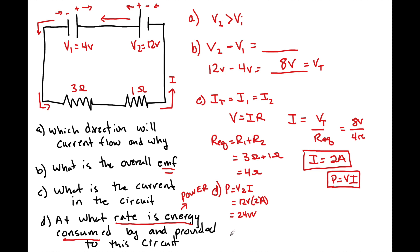While at V1, it's going to absorb energy at a rate of P equals V1I. So that's going to be 2 amps times 4 volts, which is going to be a total of 8 watts. So this is going to be energy that's provided and energy that is absorbed.